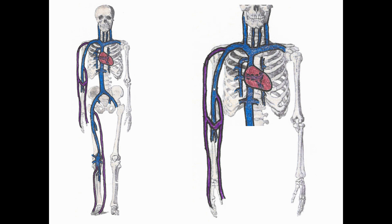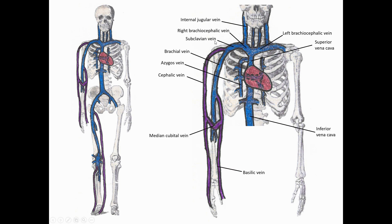Before leaving the upper limb, it's important to note there are some superficial veins with no parallel artery. On the ulnar and palmar side of the hand and anterior forearm, we have the basilic vein, draining up to the brachial vein. On the radial and posterior side of the hand and forearm, we have the cephalic vein, which drains up to the axillary vein. An important site for blood draws is the median cubital vein, which connects the basilic and cephalic veins. These are all superficial veins traveling in the subcutaneous tissue.